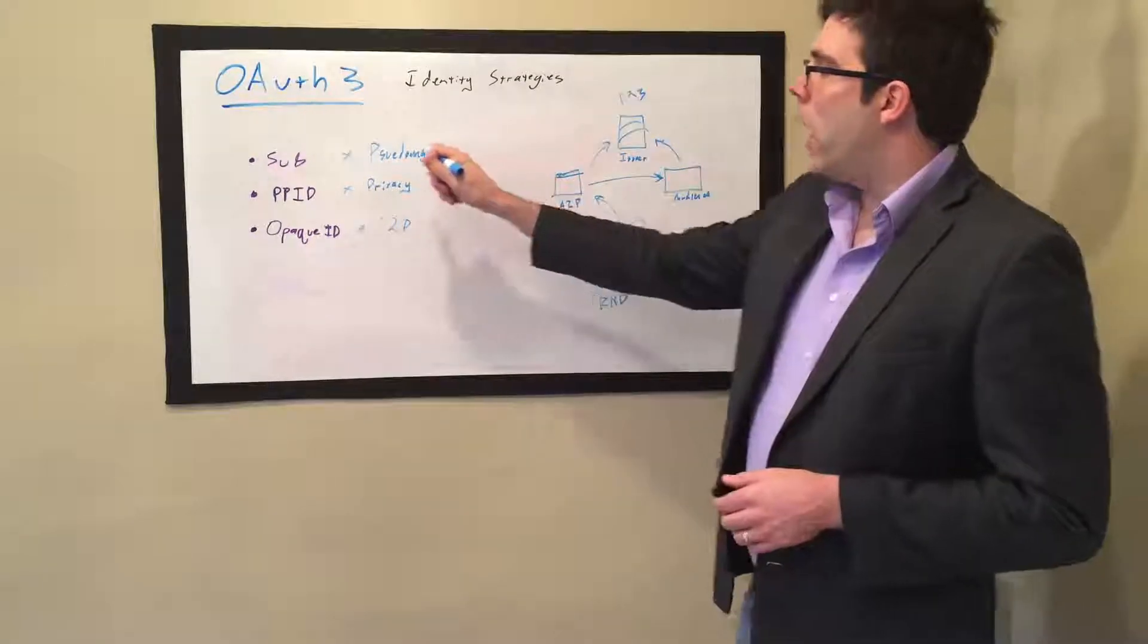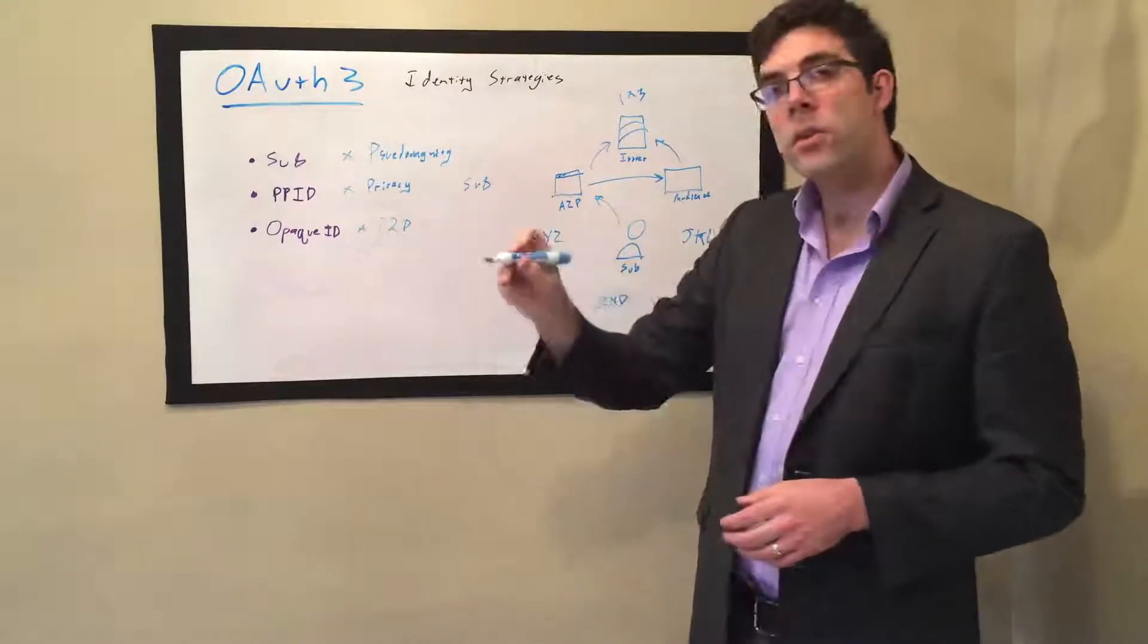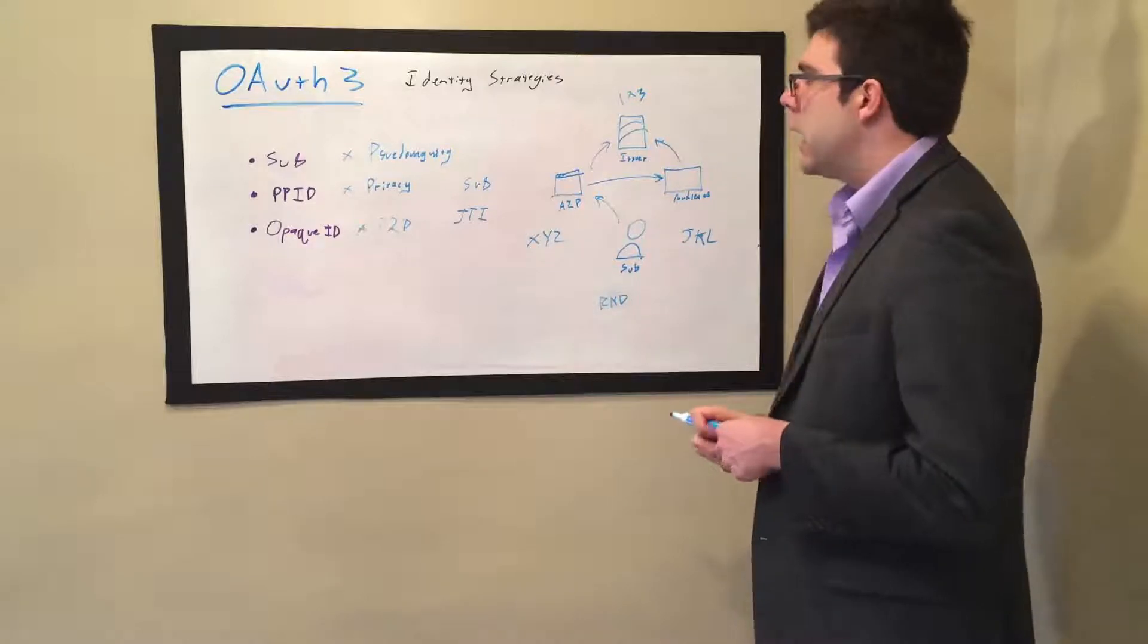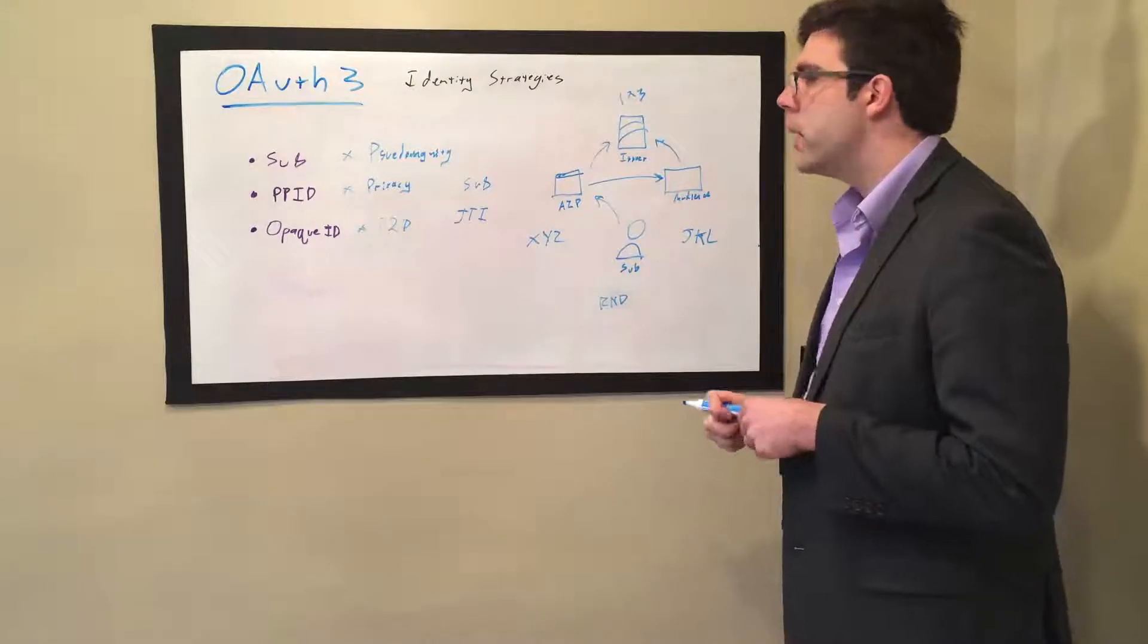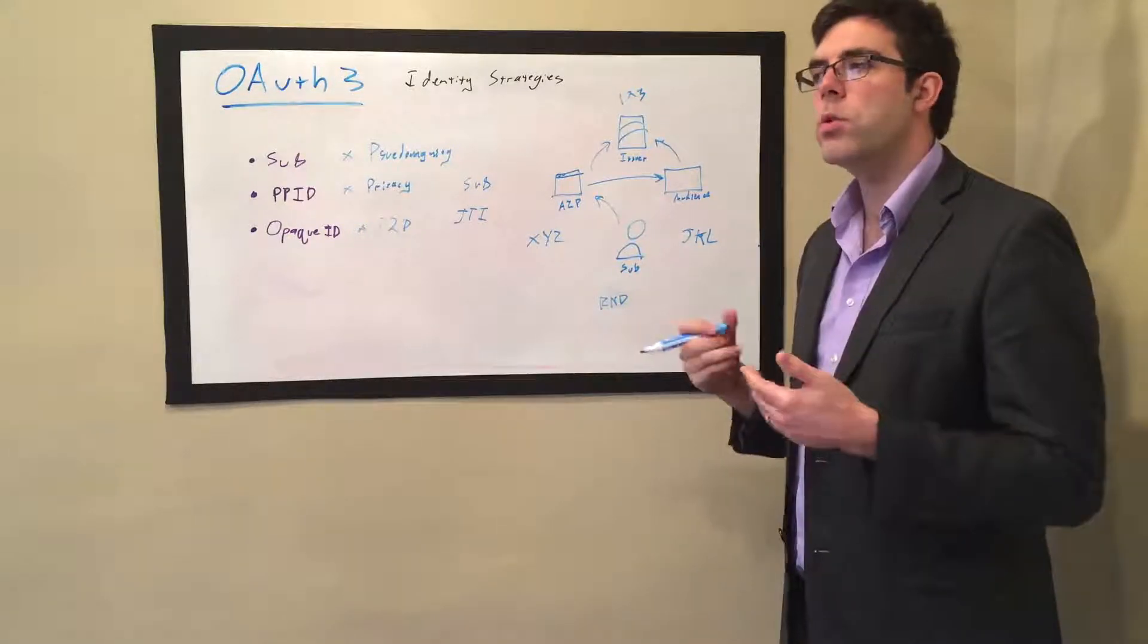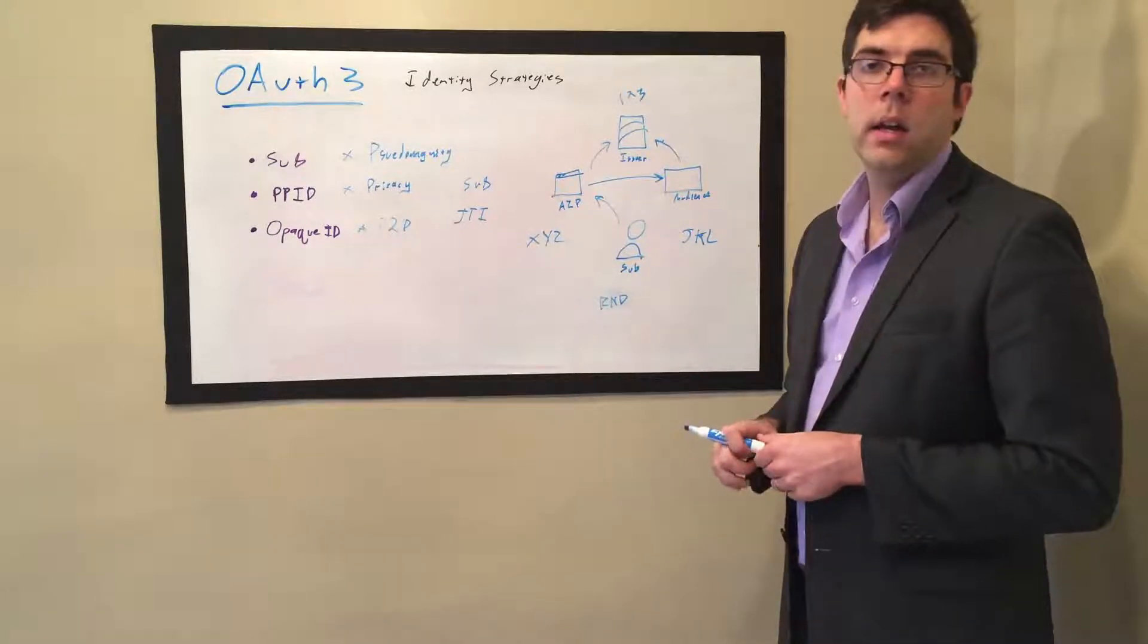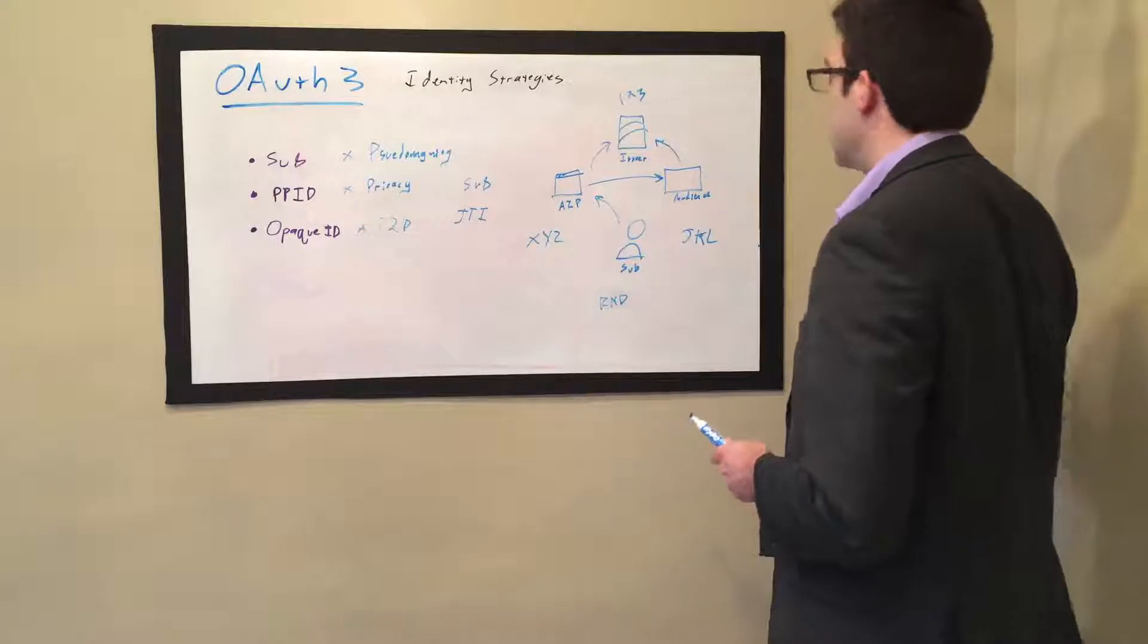Now, in practice, the PPID is always going to be referenced as a subject. And when there's an opaque ID, no subject is going to be present. It's going to be represented as an ATI and a JTI must be exchanged. So that is, those are the three identity strategies. And again, OAuth 3 is designed to give choice so that it solves problems in a way that parties can mutually agree upon what works best for the various parties involved in the efficiency or the pseudonymity or privacy and separation of concerns that the user or the system wants. And here we go.